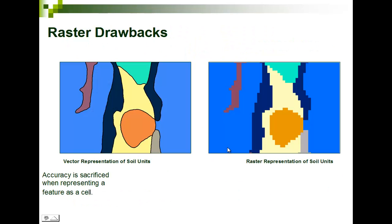Some of the drawbacks are that when I put points, lines, and polygons into a raster data environment, it gets a little choppy. I'd rather have the clean vector version than the pixelated raster version. So there are drawbacks to working with raster data, but there are also some good things.